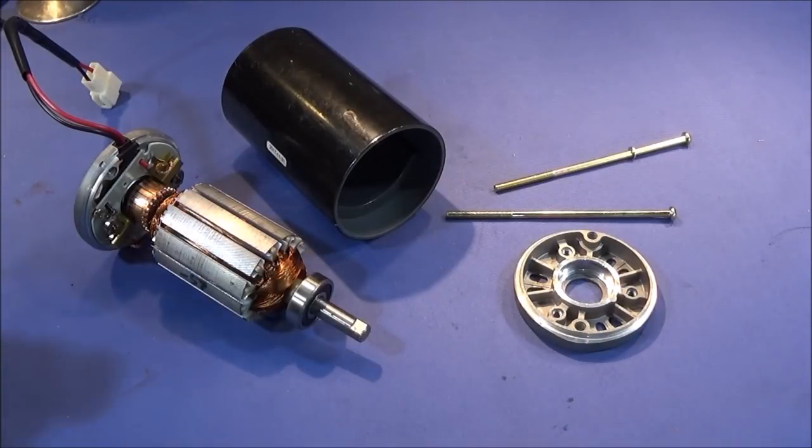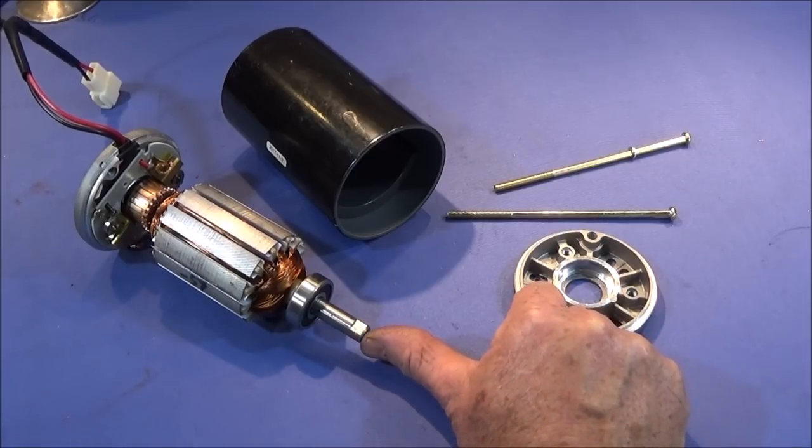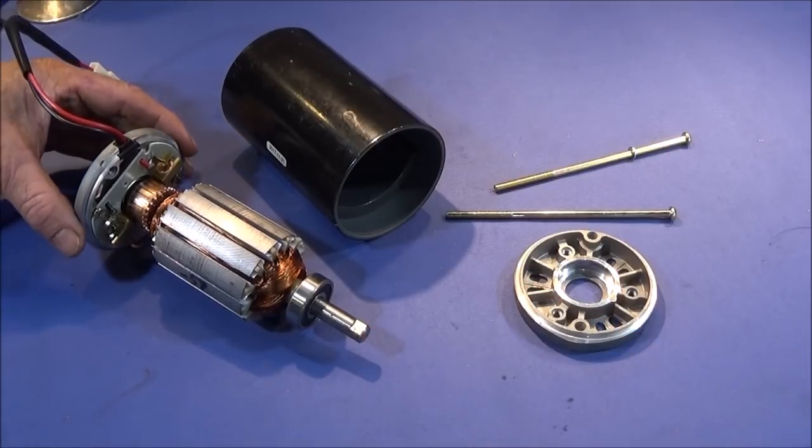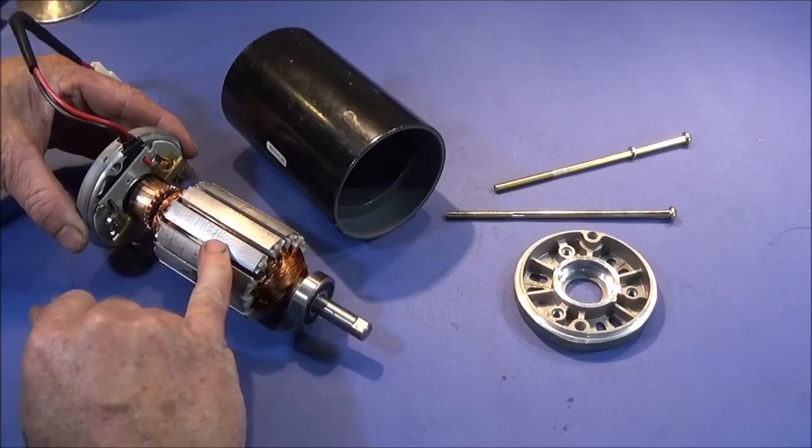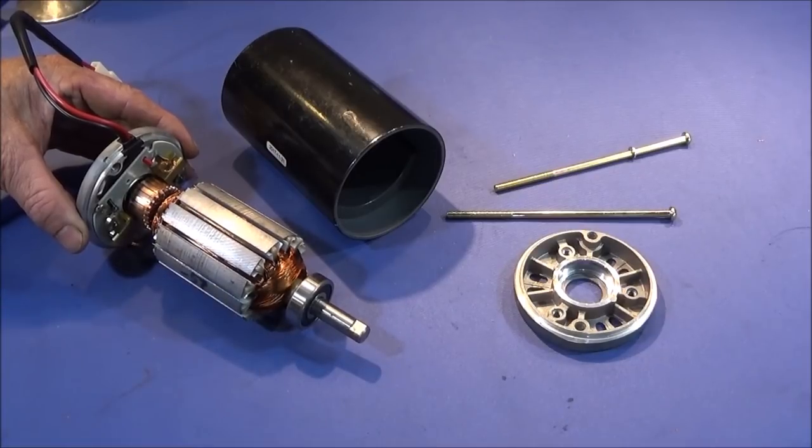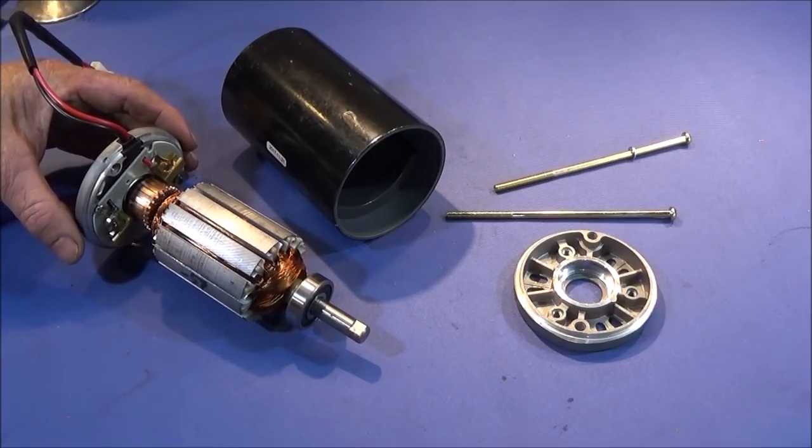When you take the armature out from the actual housing, the magnets are very powerful. With this type of motor, it's best to actually push the spindle out from the front end. If you grab hold of the back end and try and pull it out, the armature will stay in place on those powerful magnets and the brushes will come off from the commutator and fly out.